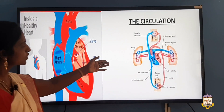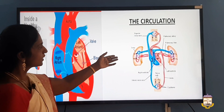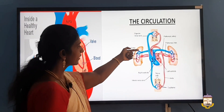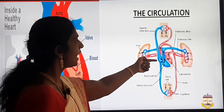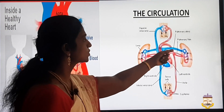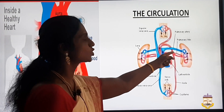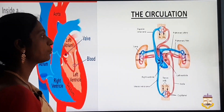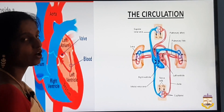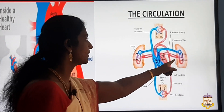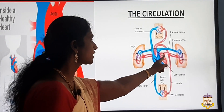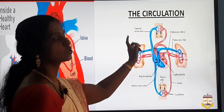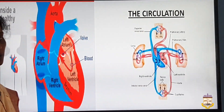The circulation process shows how blood flows from the right auricle to the right ventricle, then to the lungs through the pulmonary artery. Simultaneously, the purified oxygenated blood flows from the left auricle to the left ventricle and then through the aorta to various parts of the body.